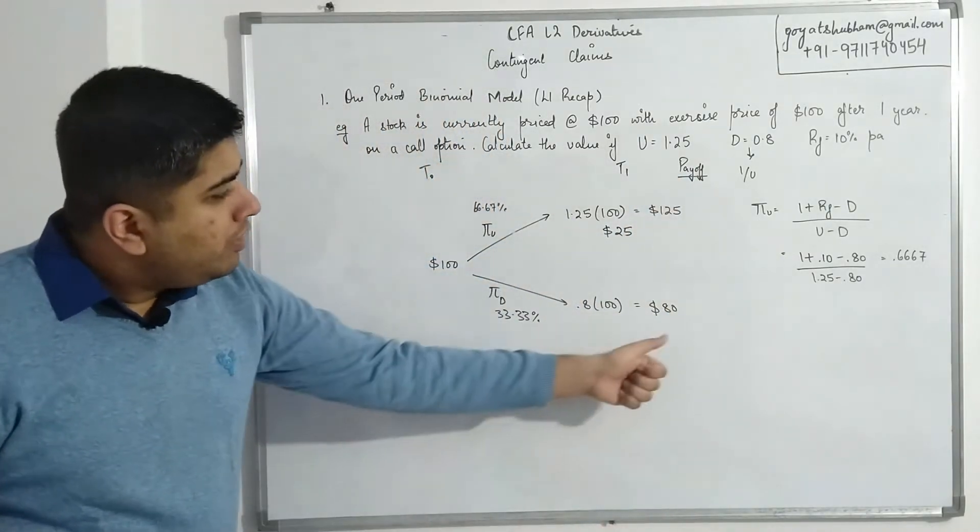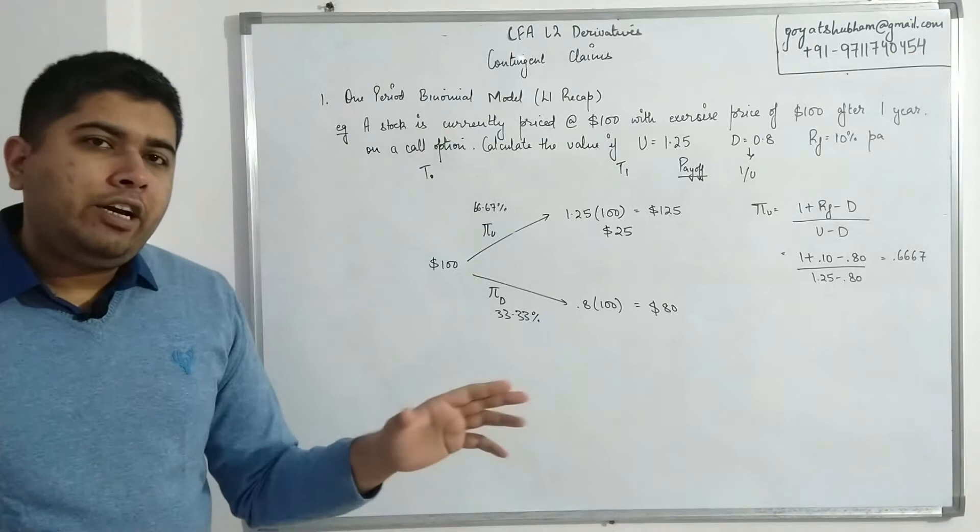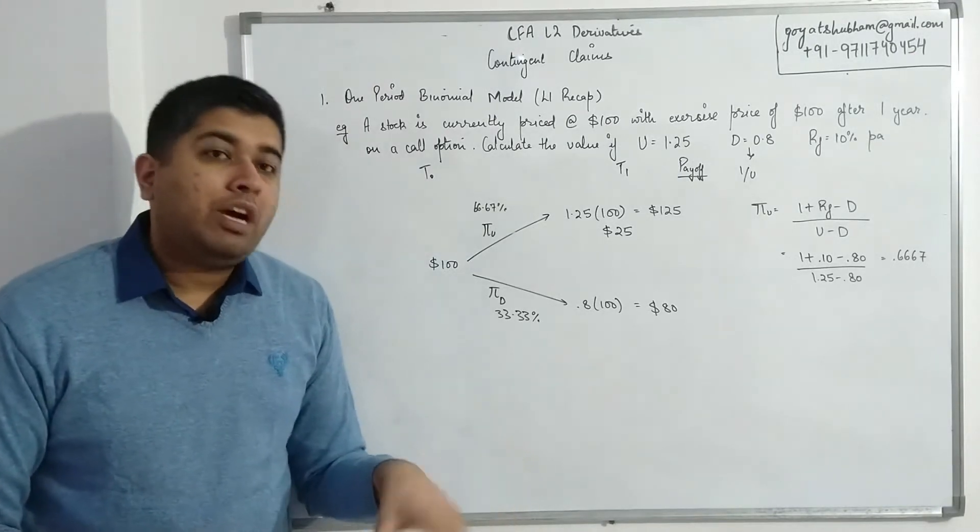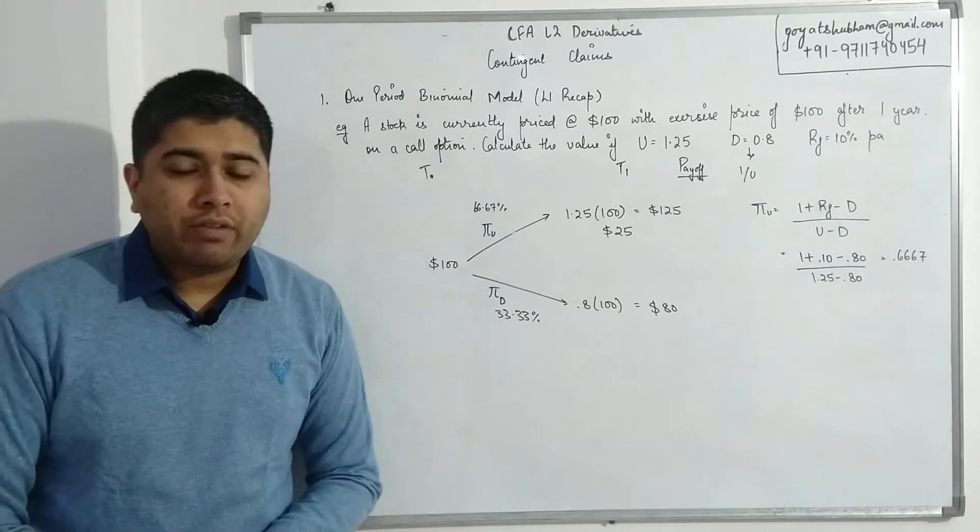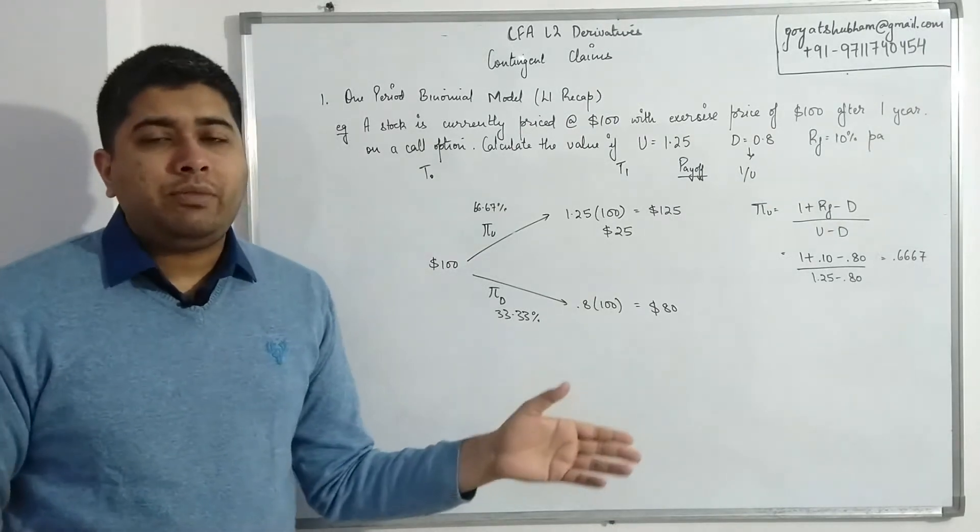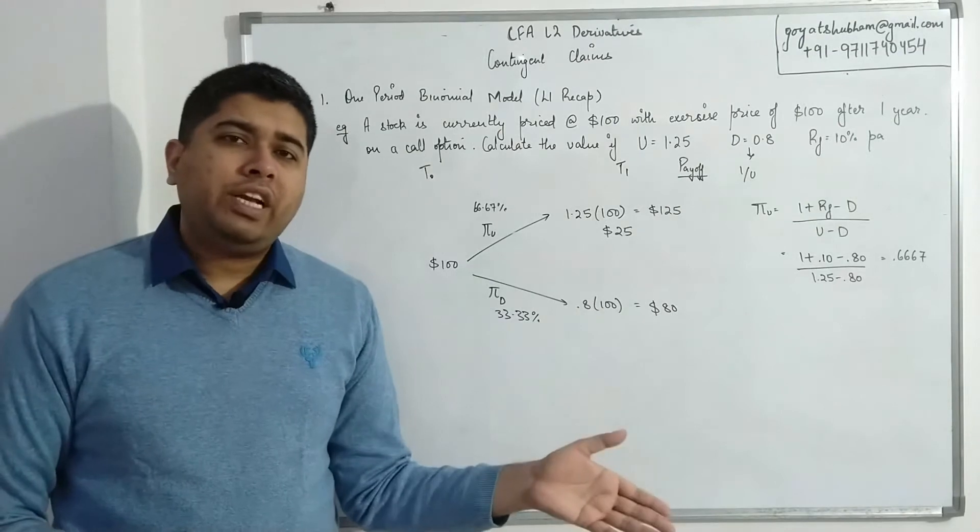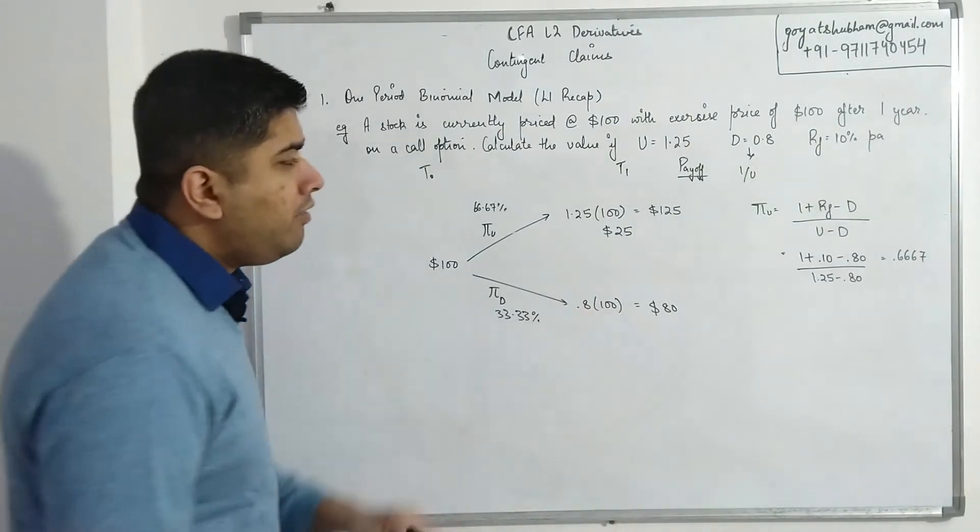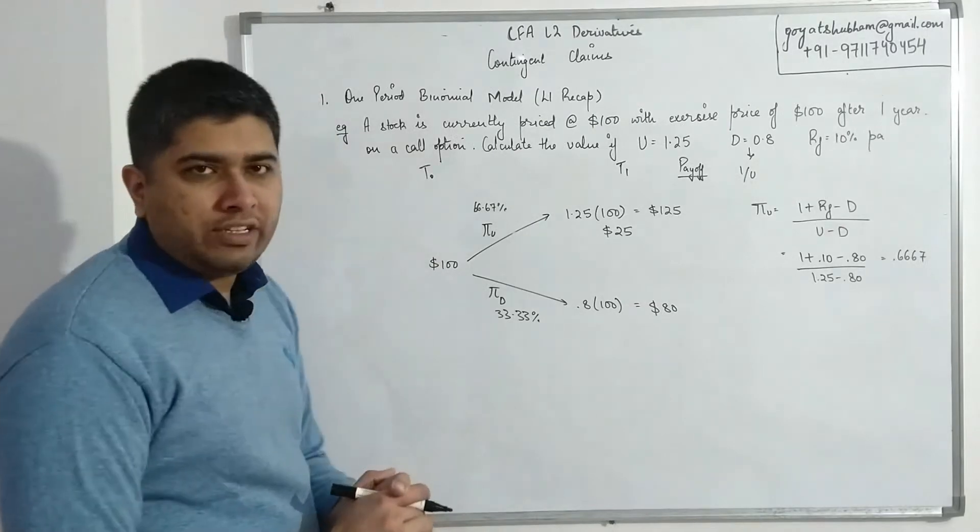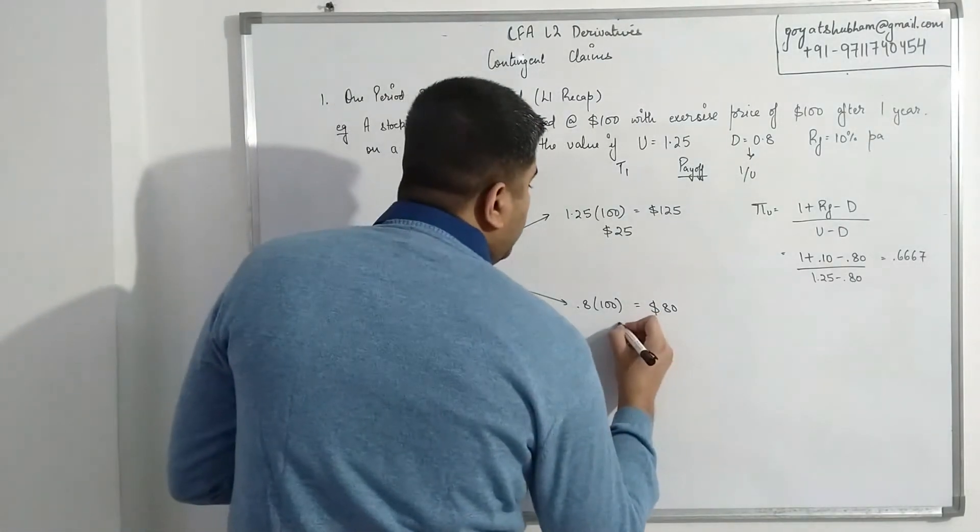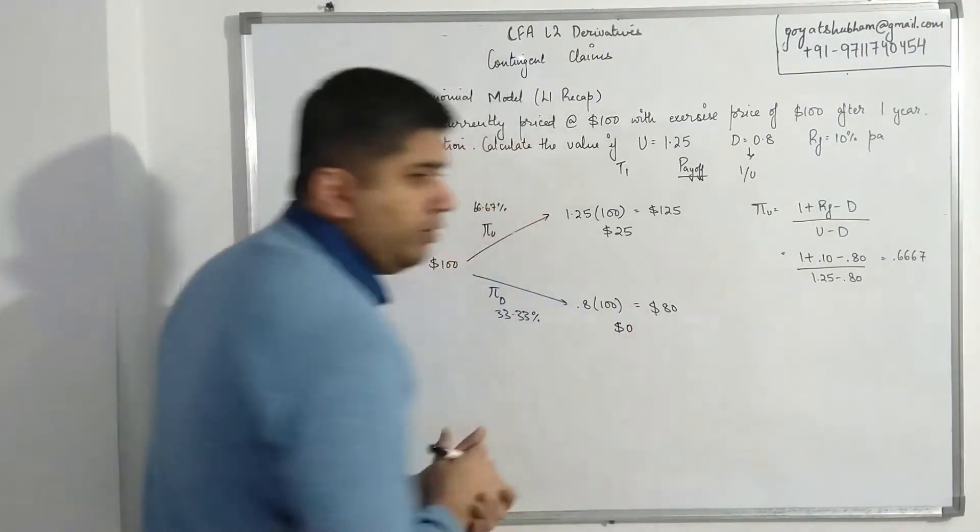But if the price of the share in the market is 80 dollars and I have an option to buy it for 100, will I actually buy it at an expensive rate? No. If I actually need those shares, I might as well go and buy them in the market at a price of just 80. So in this case I will let my option lapse, let it expire without exercising it, and over here the payoff would be zero.